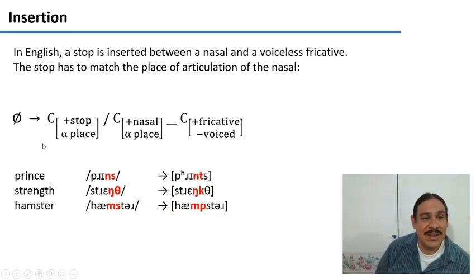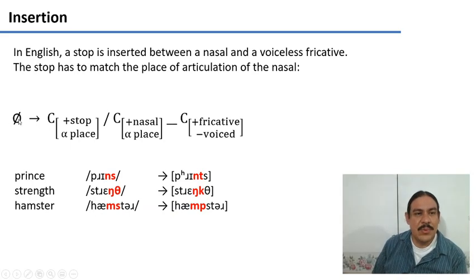How does this rule work in English? We have the symbol which means nothing, or we call it zero. So we have zero becoming a stop consonant. We're going to insert a consonant whenever we have this context: one consonant that is nasal, and then here's where we would insert a new sound, and then after that we have a consonant that is fricative and voiceless. Take a look at prince - it ends with a voiceless fricative alveolar. Strength has a voiceless fricative interdental, and hamster has a voiceless fricative alveolar as well, the s.